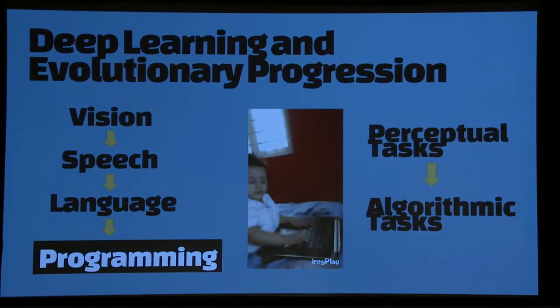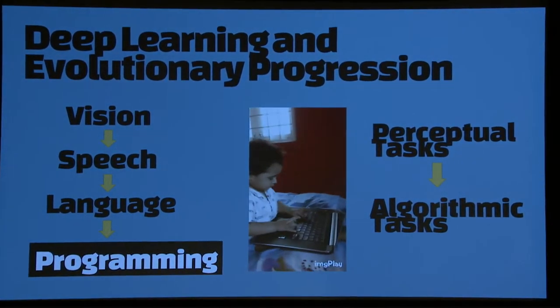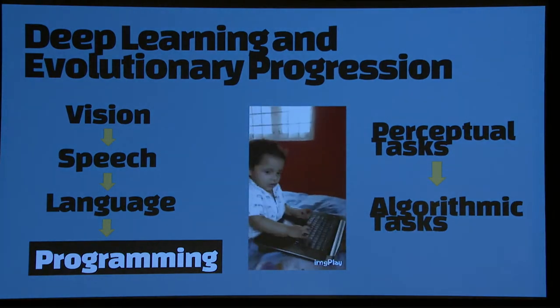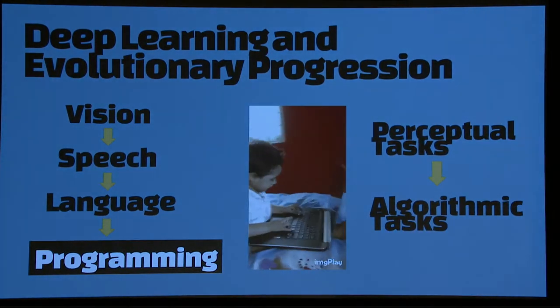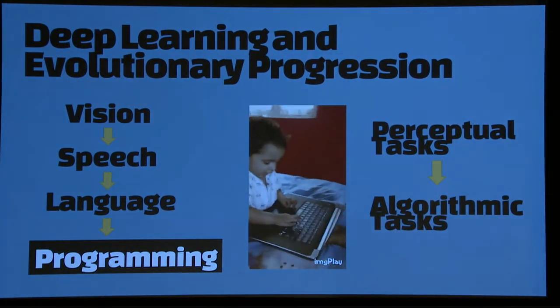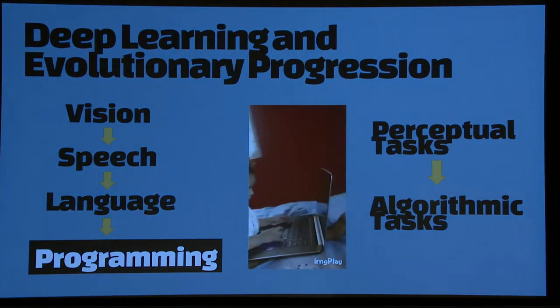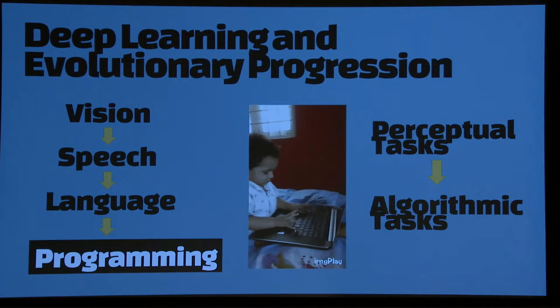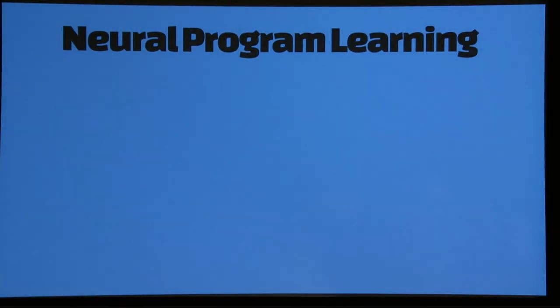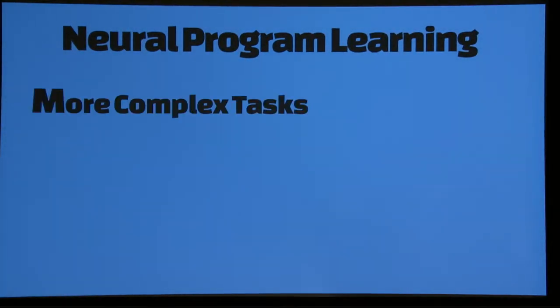But more seriously, a lot of successes we've had in deep learning have mostly been on perceptual tasks where the system has to learn a pattern and do some kind of classification task. If we want to get towards general intelligence or towards richer classes of tasks, we need to build systems that can learn to perform a sequence of actions like algorithms. The main motivation is if we can train these systems to learn programs, we'll be able to do more complex things than our current set of deep learning architectures can do.